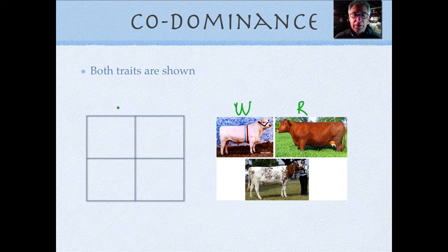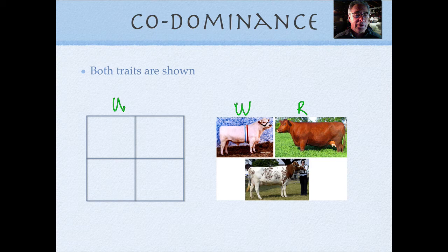Like for instance, on the male, which will be over here, this white guy over here, he's a big W, big W. And the cow, she's a red cow, so she's going to get a big R and a big R.